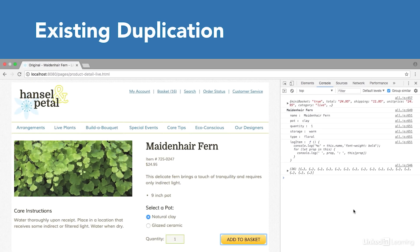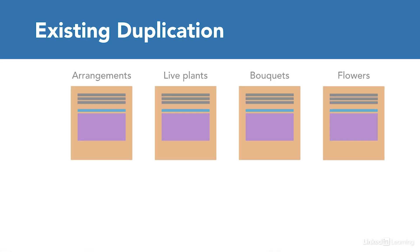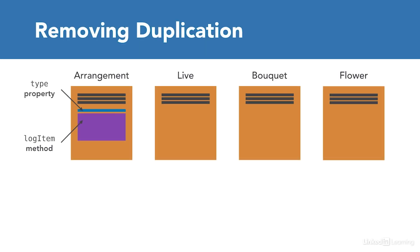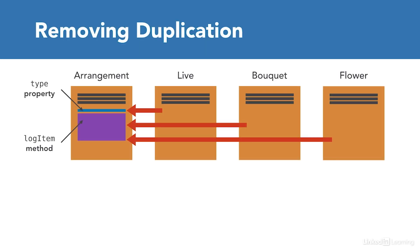In the Hansel and Petal code, for instance, we're working with four separate constructors, each with its own prototype: arrangements, live plants, bouquets, and flower stems. Each of these prototypes includes the type property with a value of floral, and each also includes a log item method with identical code. So right off the bat, we could eliminate the duplication among all of these constructors by basing them on the same prototype.